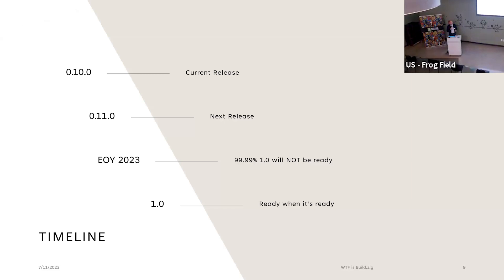Another reason why it's not a good idea to use ZIG is that the current release version is 0.10. The one I've been using is 0.11, but it's a pre-release. I have no idea when it's going to be released — probably this year, but I can't guarantee that. Some things will always break almost every day, although it has been stabilizing. There are a lot of people in the community asking when 1.0 is coming. Andrew has said that 99.99% certainty, 1.0 will not be ready by the end of this year — the earliest is 2024. It's one of those things: it's ready when it's ready.